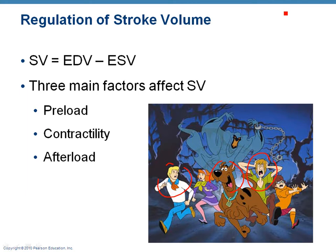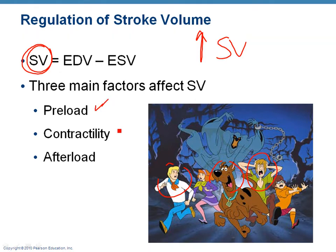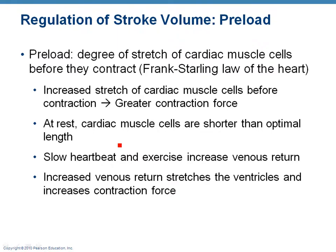There are three main factors that can affect your stroke volume. One of them is called preload, and we'll see more about what that means in a minute. A second one is contractility — maybe you can already figure out that that's the force of contraction of the ventricles. If you want to increase your stroke volume, you've got to squeeze more blood out of the ventricles. And then a third one is called afterload. Preload and afterload are not quite as clear just by their names.